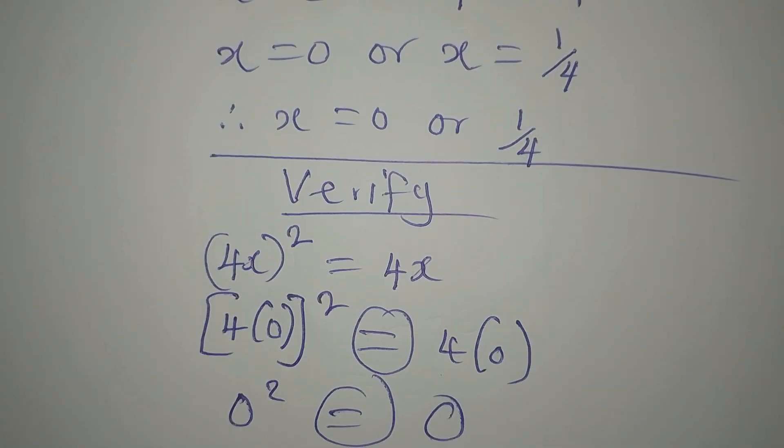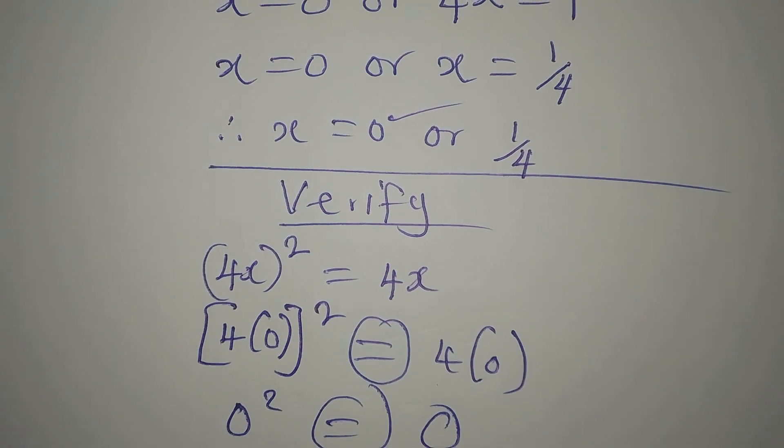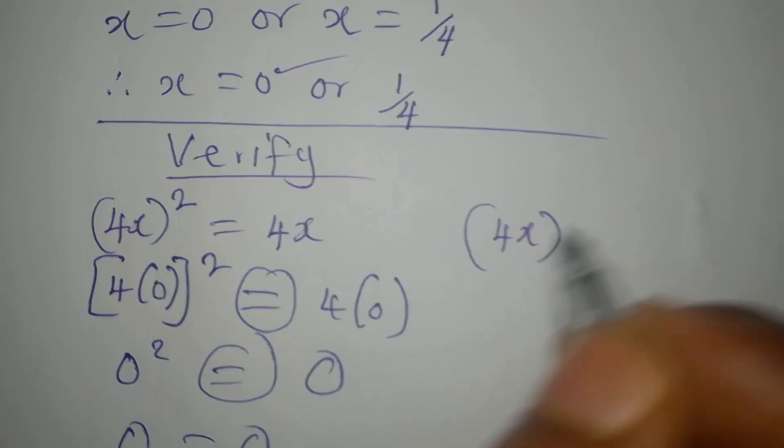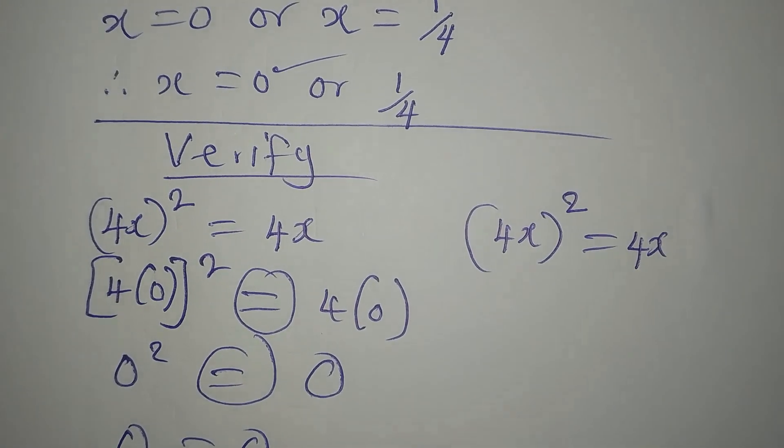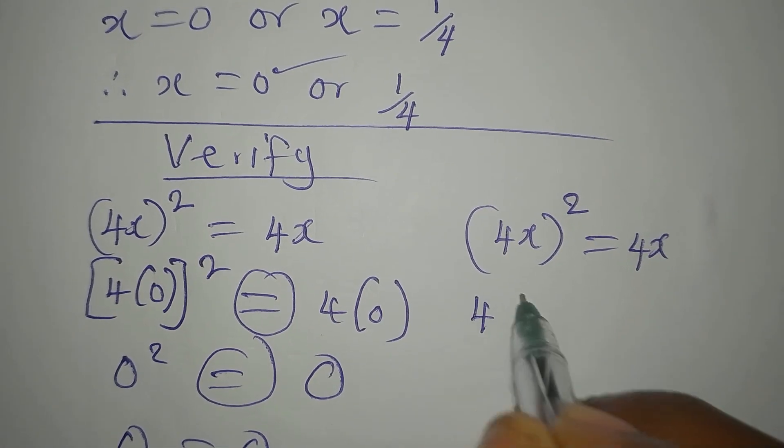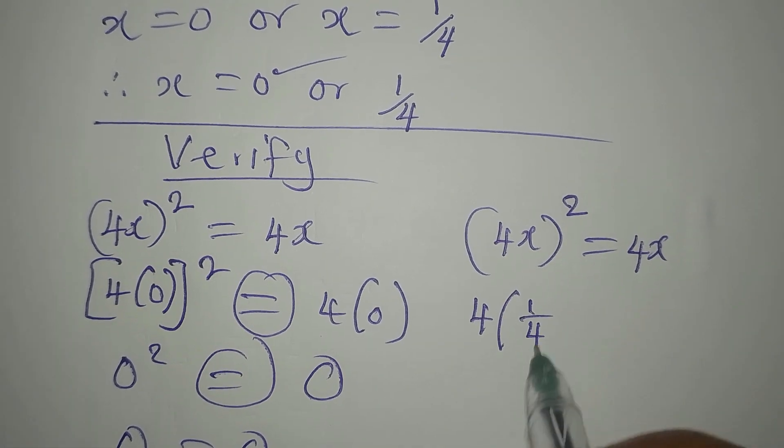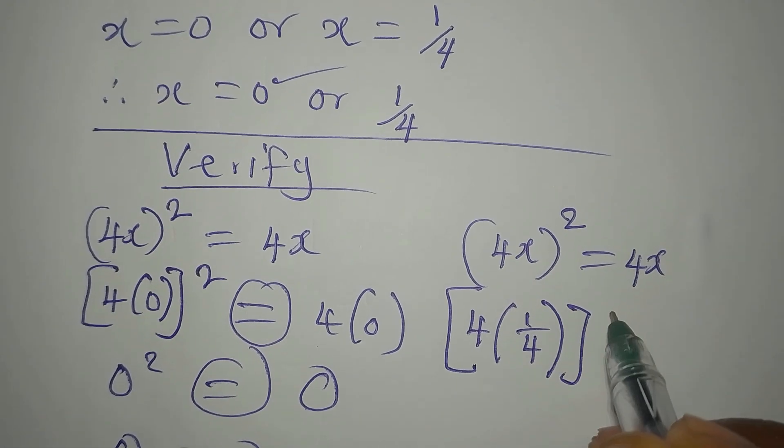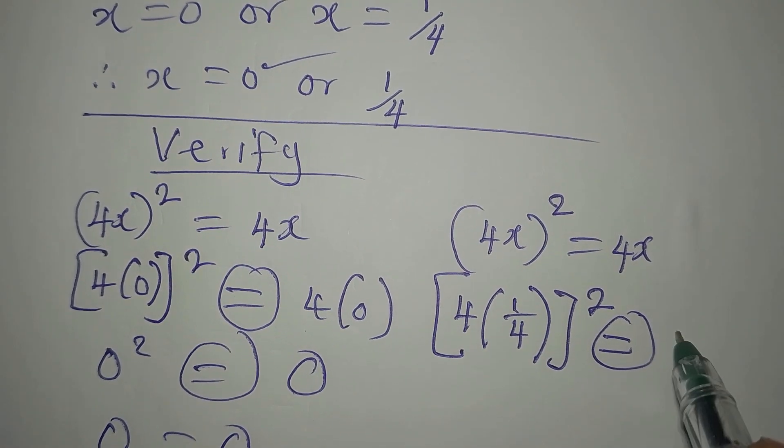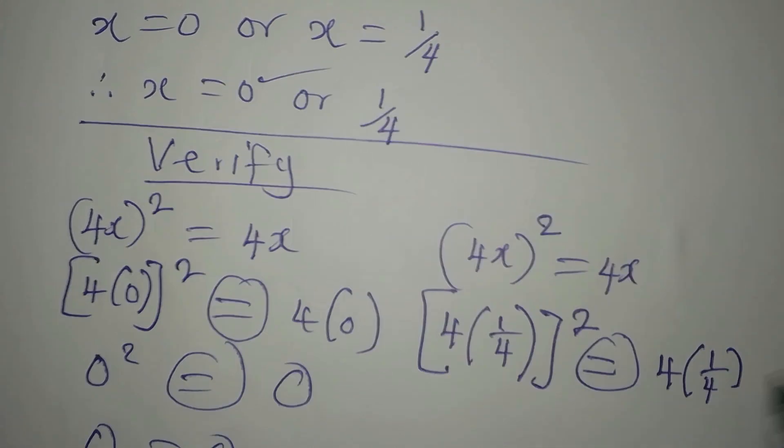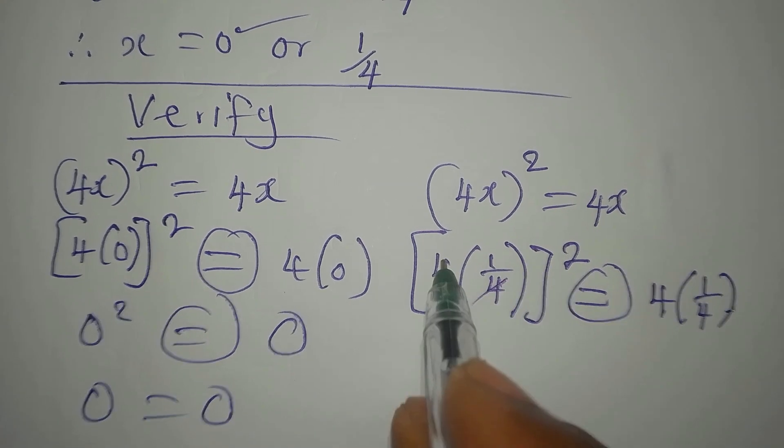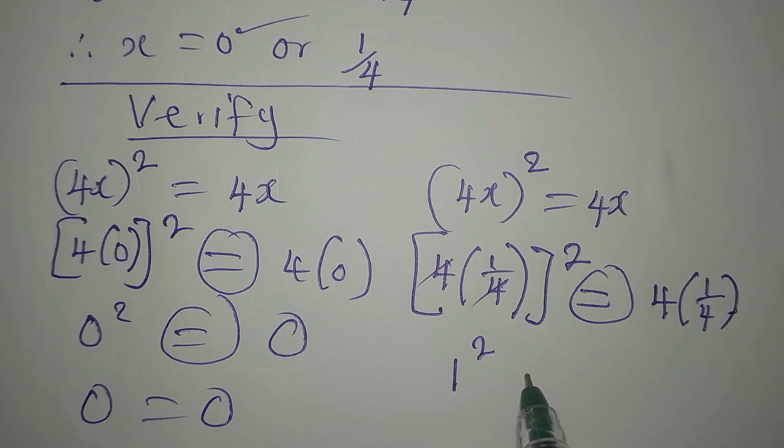Now let's verify the second solution. We still have (4x)² = 4x. In place of x, I'm going to write 1/4, so we have [4×(1/4)]² on the left and 4×(1/4) on the right. This simplifies to 1².